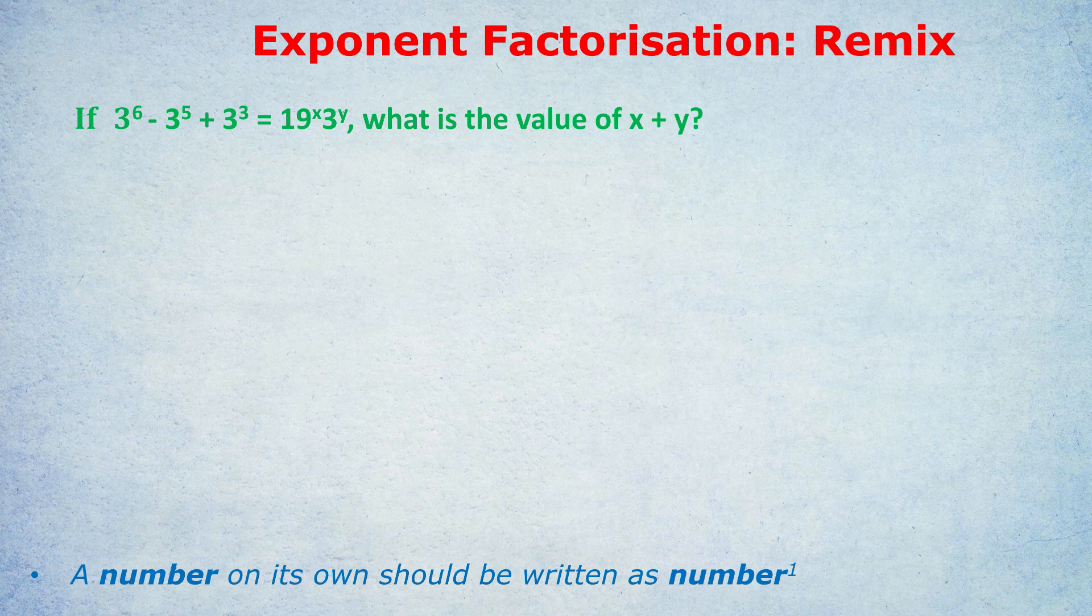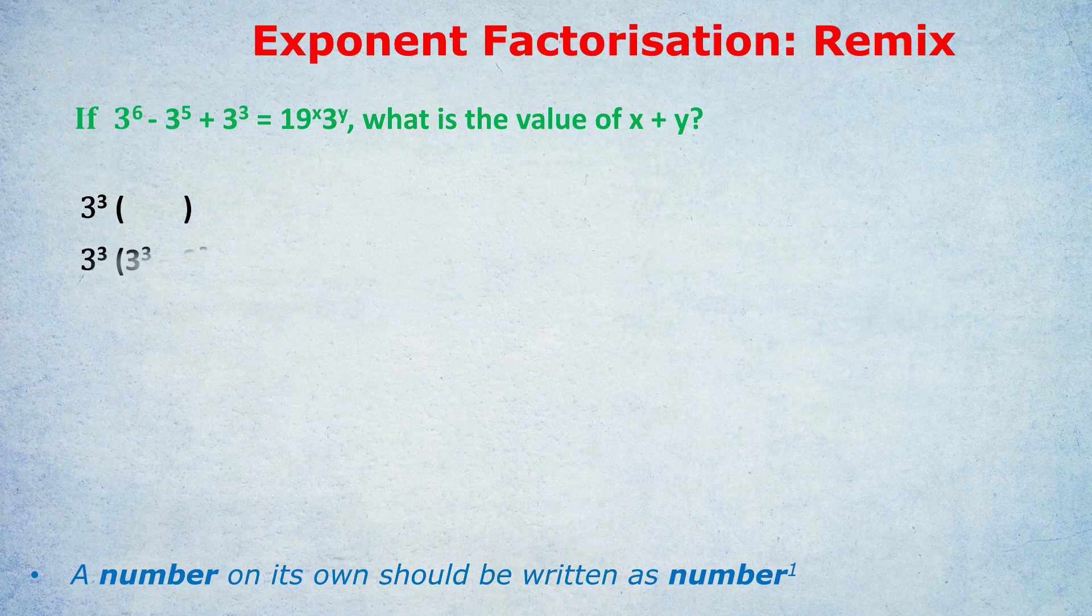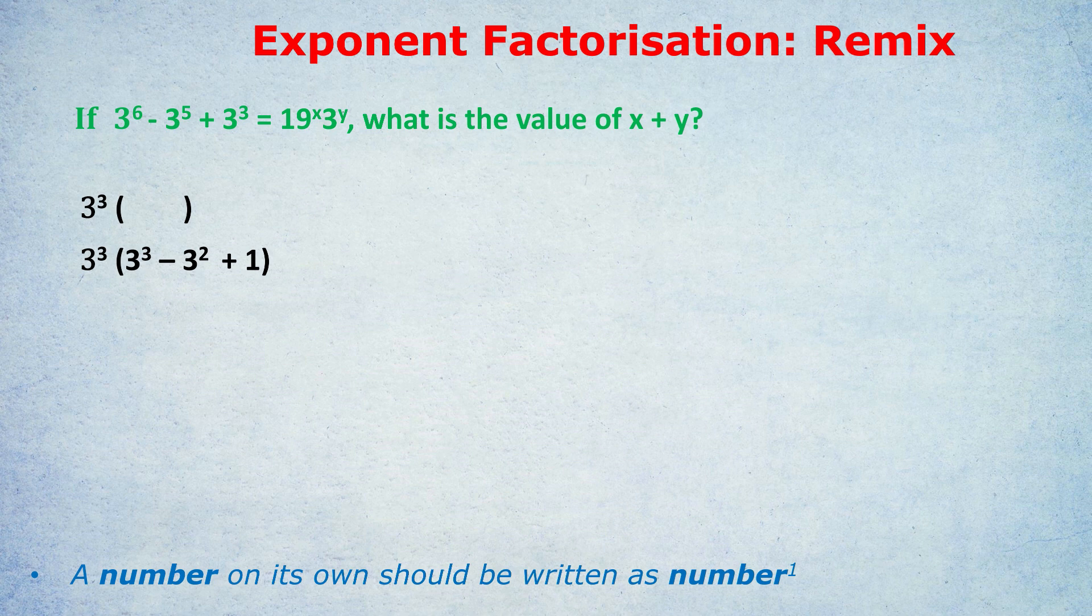Which number am I going to factorize? You guessed it, 3 to the power of 3. That's the smallest exponent, so that's the one that gets factorized. This time, I'll just write 3 to the power of 3 with a bracket. What are the three items that go inside the bracket? This is probably the hardest step that many students get confused at.